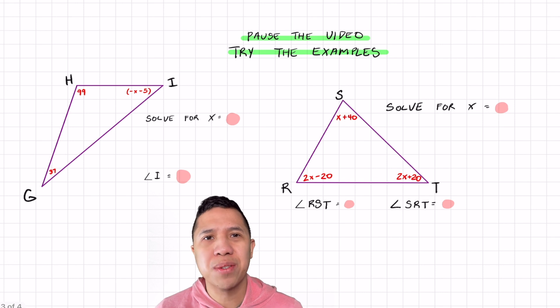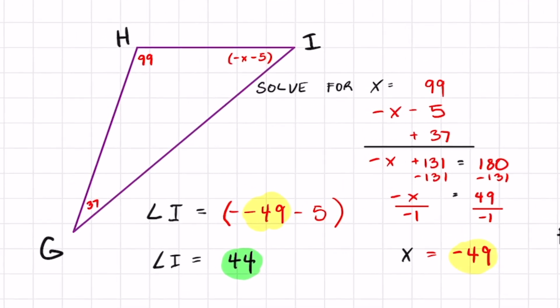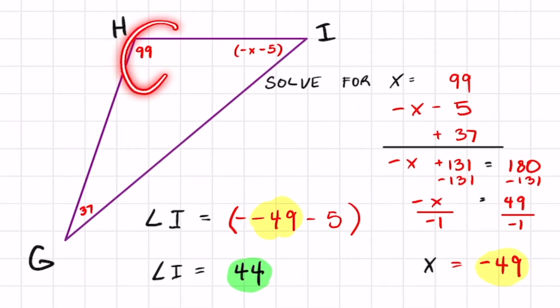I want you to try these two problems out. Just pause the video. Remember, all the expressions when you add them inside a triangle add up to 180. When you're done, unpause the video for the answers. Here's your answer. Hopefully we got matching answers. Remember, all three have to add up to 180, and it helps a lot if you write it vertically. Don't let this negative x confuse you either. If there's not a number in front, the coefficient is negative one, so you get x equals negative 49.